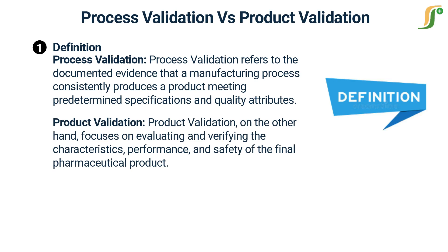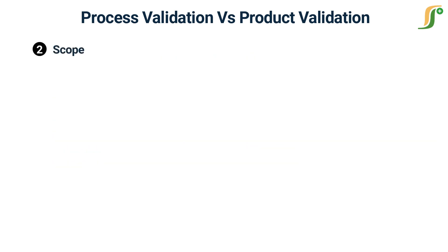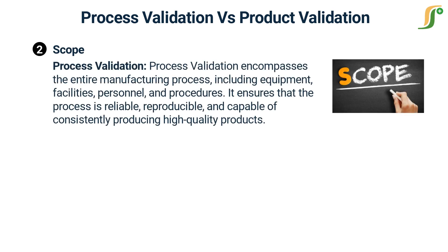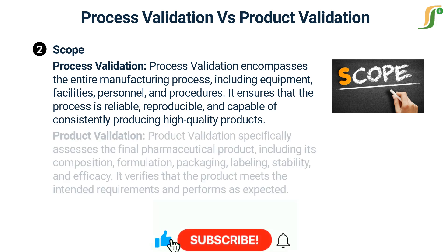Scope: Process validation encompasses the entire manufacturing process, including equipment, facilities, personnel, and procedures. It ensures that the process is reliable, reproducible, and capable of consistently producing high quality products.